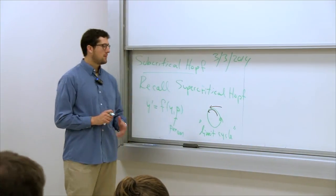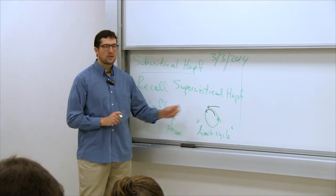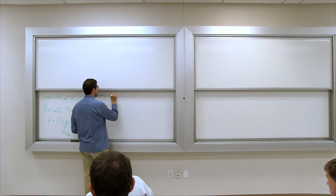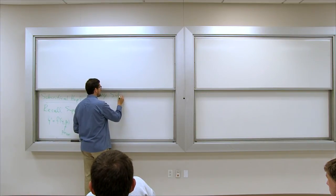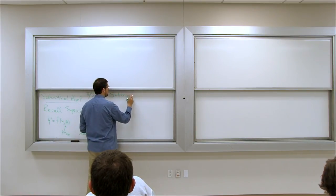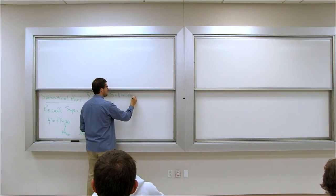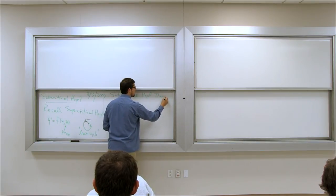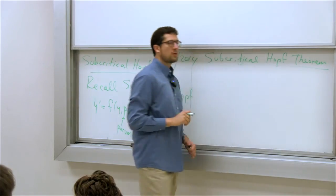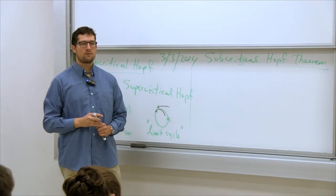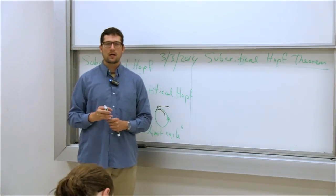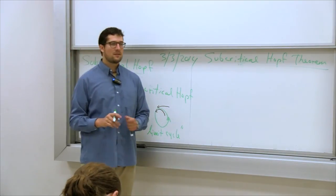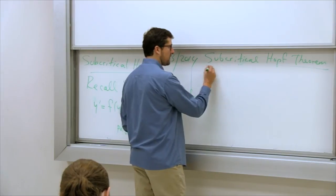In general, proving the existence of periodic solutions is very hard in a dynamical system. So this is one of the few tricks that we have to prove the existence of such solutions. There are other ones, especially for two-dimensional systems, but this is one that can be generalized to multiple dimensions — that's why I'm especially interested in it. But that was supercritical Hopf bifurcations. Now let's talk about subcritical Hopf bifurcations.